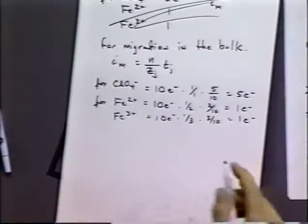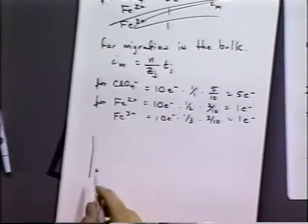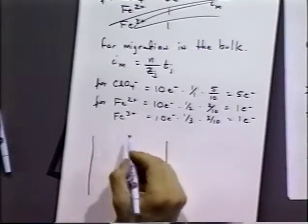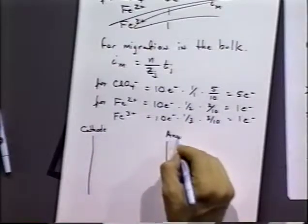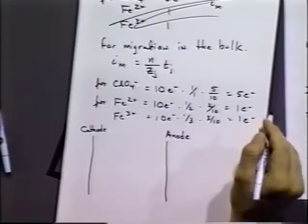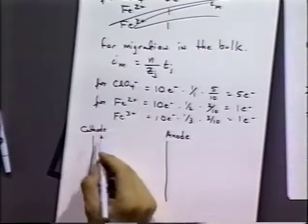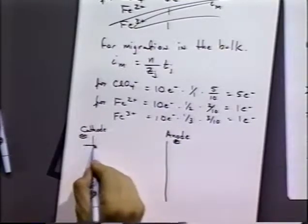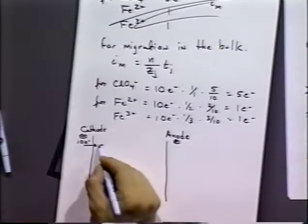So, in the bulk, what we're saying is that if we have a system that's composed of two copper electrodes, cathode and anode, the cathode having a negative charge, anode having a positive charge, ten electrons are coming in in the system, because that's what we said was happening.